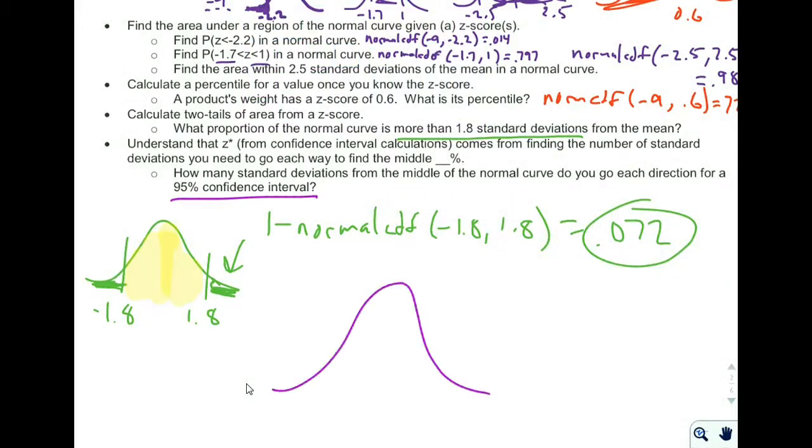If I were to sketch a normal curve, I could play around with different values and say, let's guess negative 2 to 2. And if I did that, if I did normalCDF from negative 2 to 2, I would get 0.954. And so I need to maybe get a little bit less.